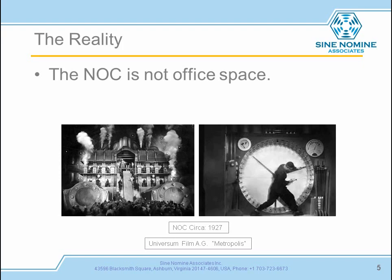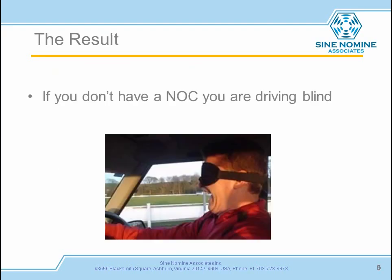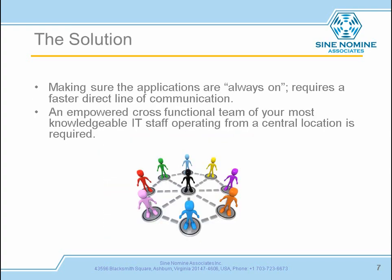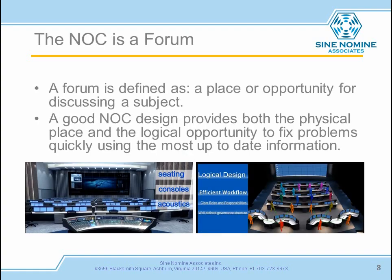These photos are from the famous film Metropolis from 1927. The reality is today, if you don't have a NOC, you're really driving your business blindfolded. The solution is to make sure that the applications are always on, and that requires a faster direct line of communication. You need an empowered cross-functional team of your most knowledgeable employees — they need to be in one space where they can quickly communicate with each other, share ideas, ask for decisions to be made, share information, and share with their outbound groups from within this core.